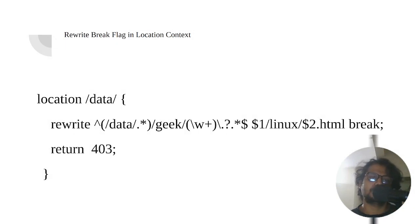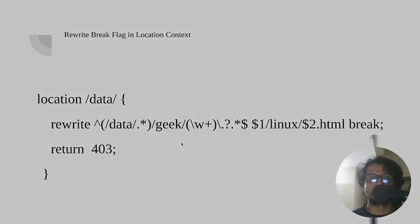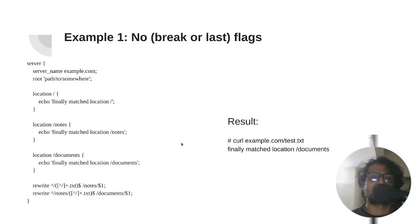Now here is the example using the 'break' flag. Whenever it finds this kind of URL pattern — containing 'data' and the word 'geek' — it will be replaced by data/linux/geek.html, and it will break, meaning it will stop processing any further rewrite rules and return a 403.